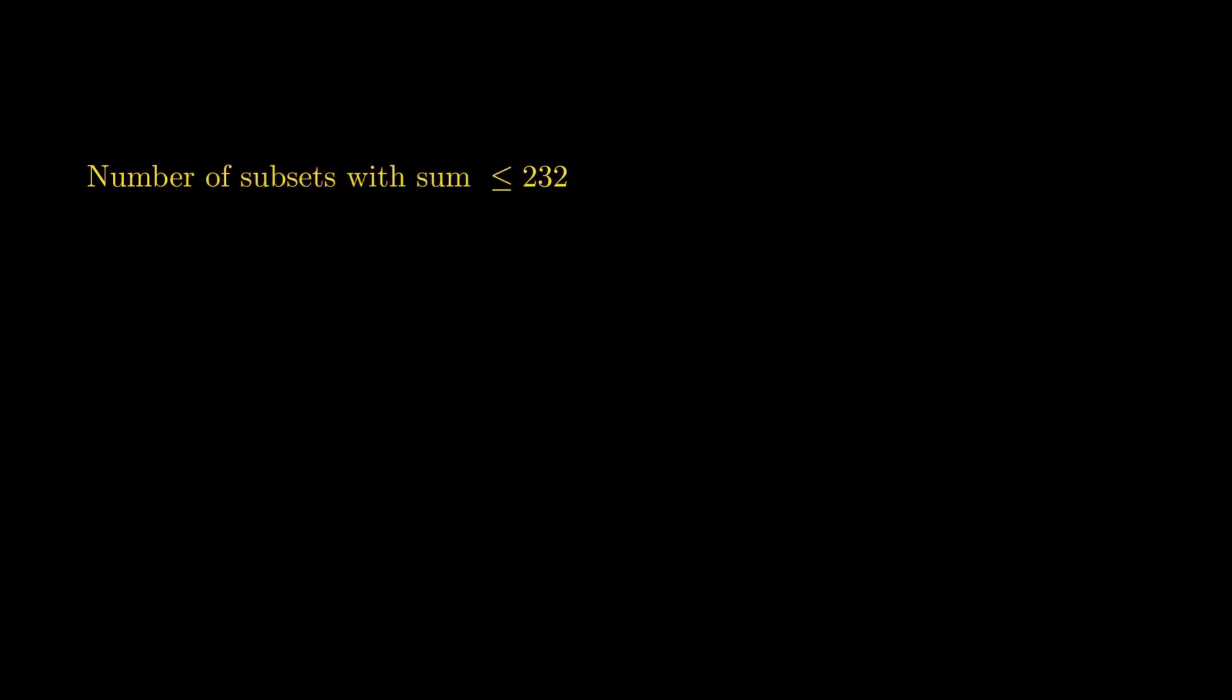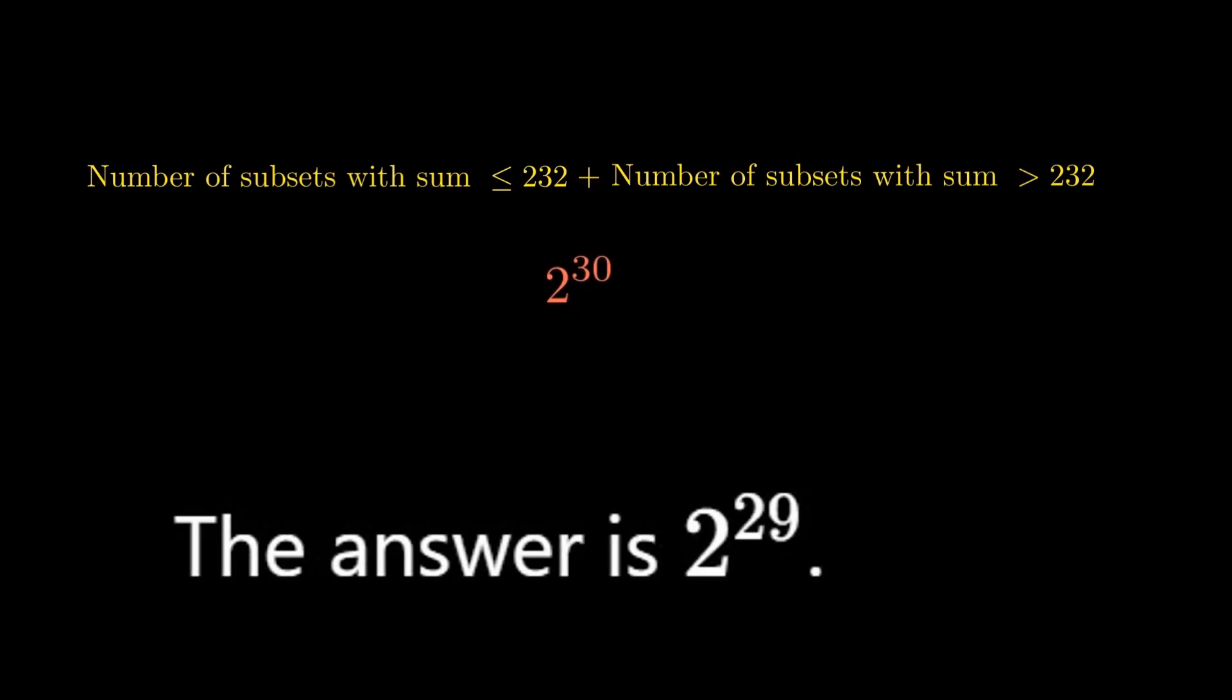Now, the number of subsets with a sum less than or equal to 232 and the number of subsets with a sum greater than 232 must add up to the total number of possible subsets of 1, 2, 3, till 30, which is 2 raised to the power 30. Since these two are equal in number, they both must be equal to 2 raised to the power 29. Hence, the answer is 2 raised to the power 29.